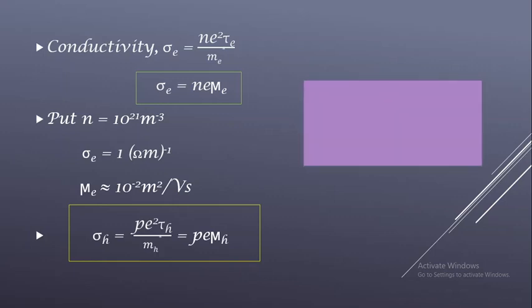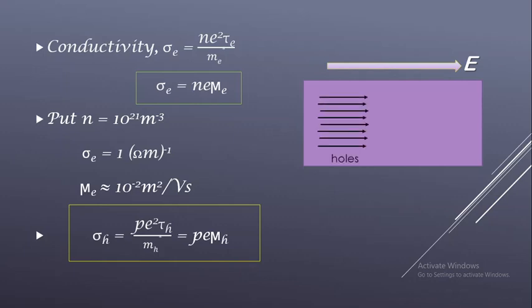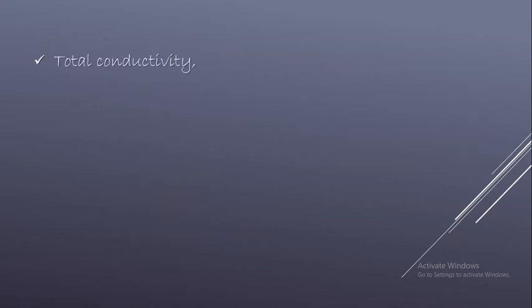If we consider a semiconductor with an electric field applied along the positive x-axis, the holes stream in the same direction as the field because they are positively charged, whereas electrons stream opposite to the field direction because electrons are negatively charged. Both electrons and holes are charge carriers in semiconductors. To find the total conductivity, we sum the conductivities due to both types of carriers.